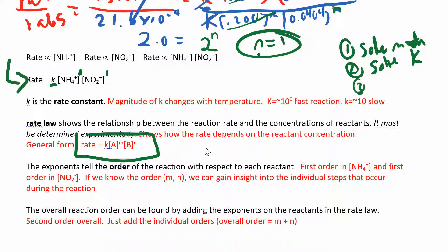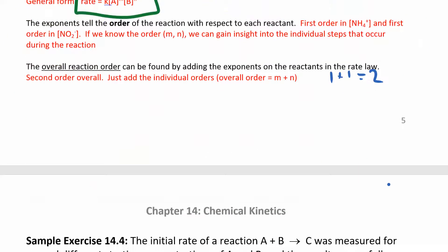I forgot to mention in the last video that the overall order, since m was 1 and n was 1, is just 1 plus 1 equals 2. So it's very easy — just add up the two orders to get the overall order.